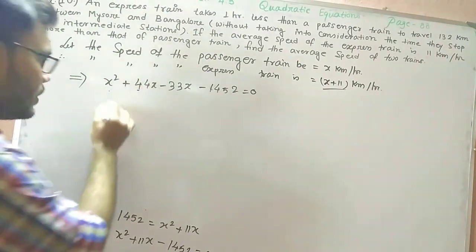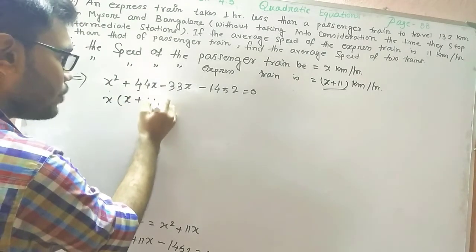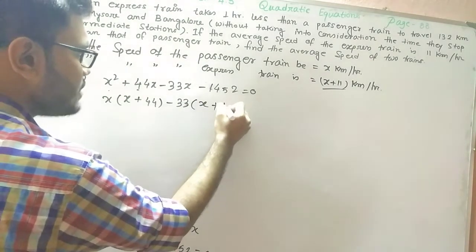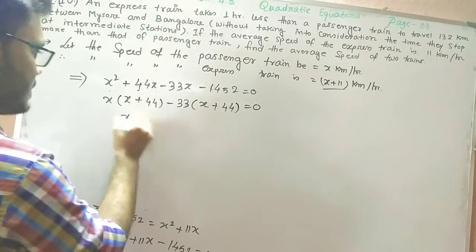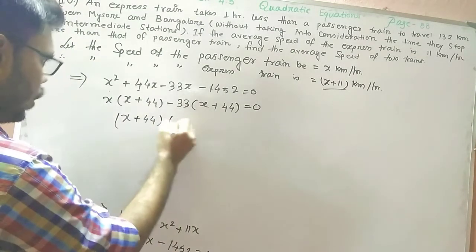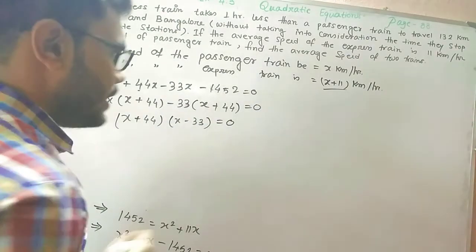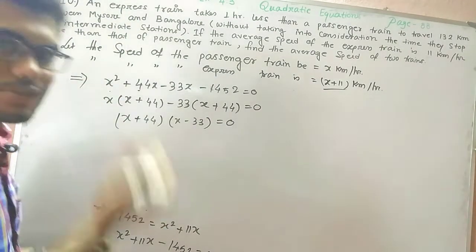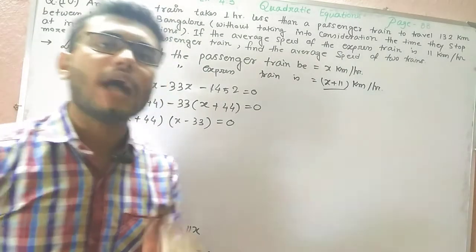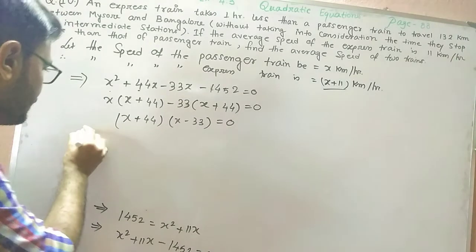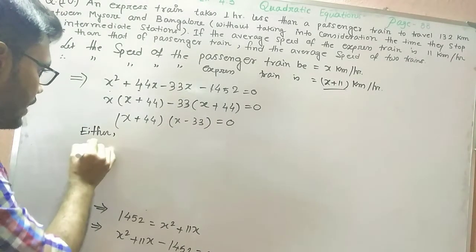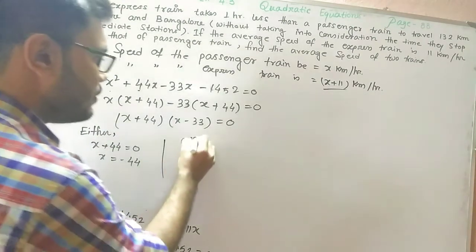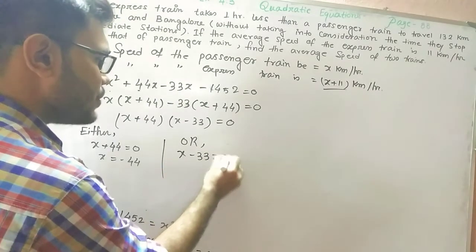From the first two terms, take common x: x(x+44). From the last two terms, take common minus 33: minus 33(x+44). So x+44 is a common factor, giving (x+44)(x-33) equals 0. Whenever the product of two quantities equals zero, either of them must be zero. Therefore, either x+44 equals 0, giving x equals minus 44, or x minus 33 equals 0, giving x equals 33.